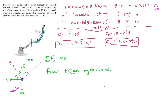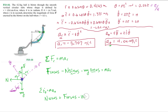Mass times acceleration on the right-hand side. Now for the transverse (θ) direction: N cos 45° + F cos 45° − mg sin 45° = m · a_θ. You can see how involved this gets. We have two equations and two unknowns — F and N — since we know the mass and the accelerations.